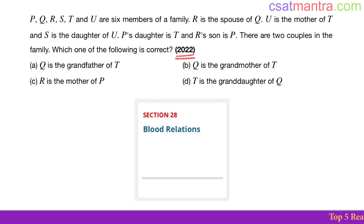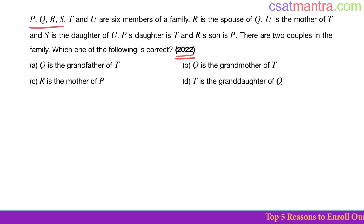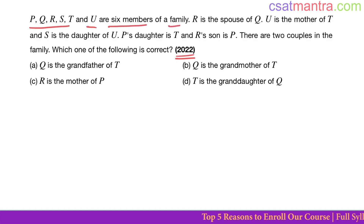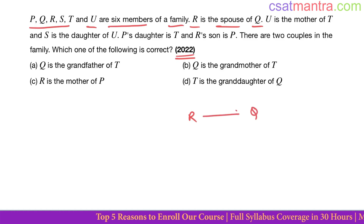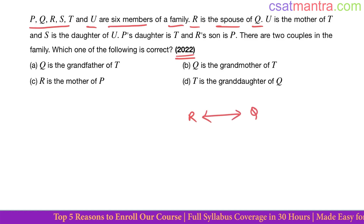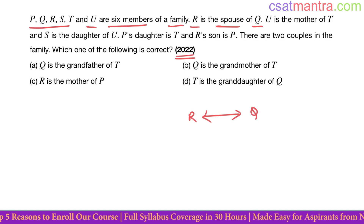2022 question based on blood relations. P, Q, R, S, T, and U are six members of a family. R is the spouse of Q — spouse means husband or wife — so R and Q's genders we do not know as of now.